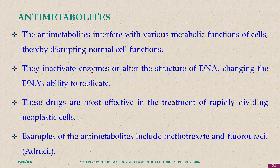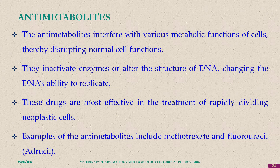Antimetabolites interfere with various metabolic functions of the cell, disrupting normal cell functions. They inactivate enzymes or alter the structure of DNA, changing DNA's ability to replicate. These are called antimetabolites — they are most effective against rapidly dividing neoplastic cells. Examples include methotrexate, which is also used in psoriasis, and 5-fluorouracil.